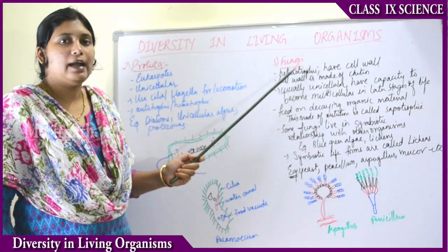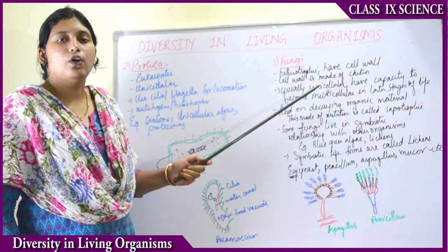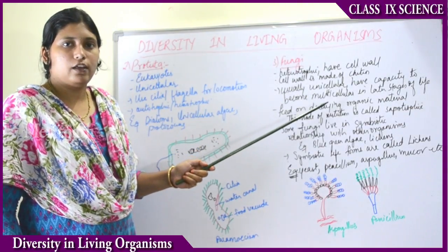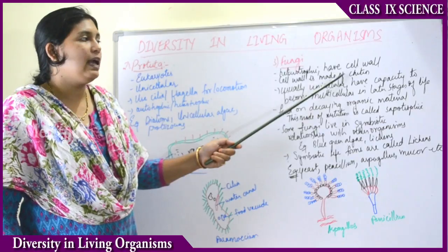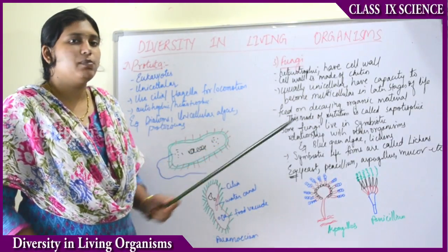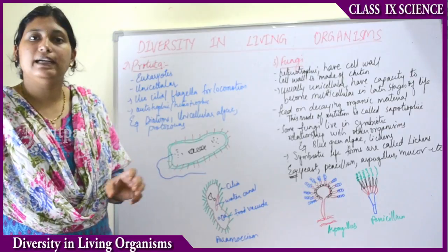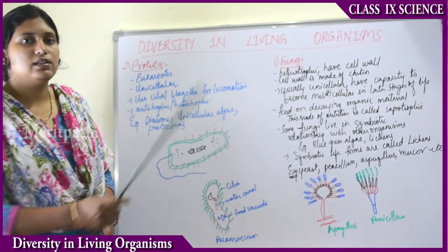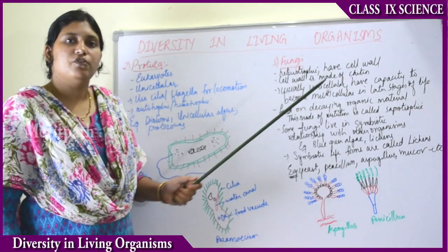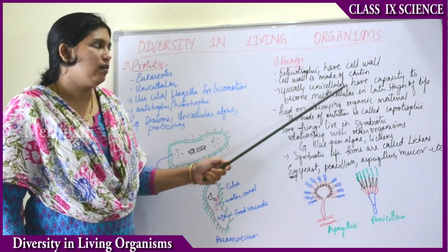Fungi are heterotrophic — they depend on others for their food. They have a proper cell wall, and the cell wall is made up of a hard substance known as chitin.